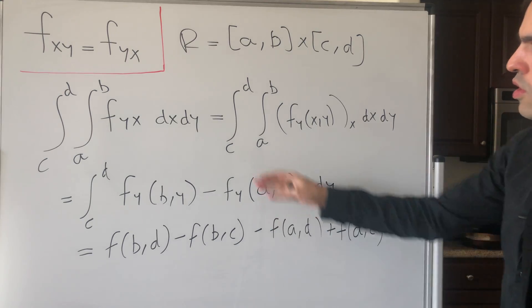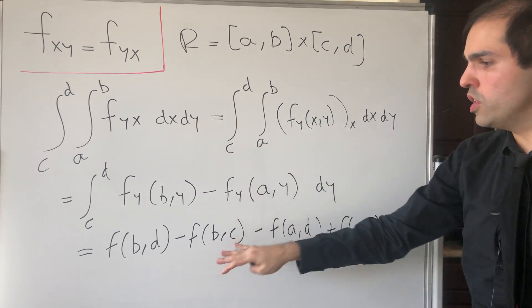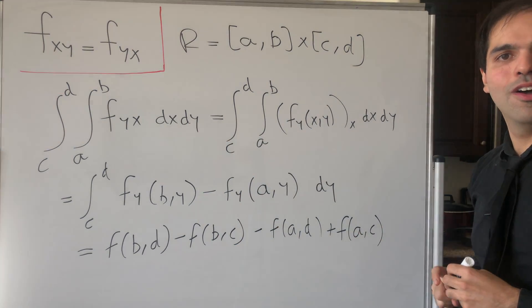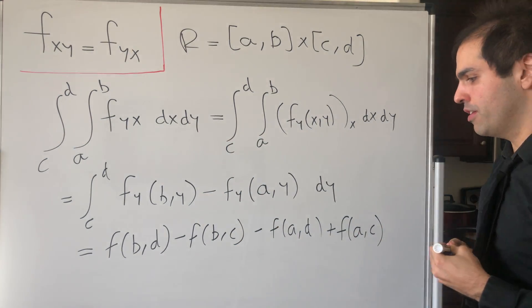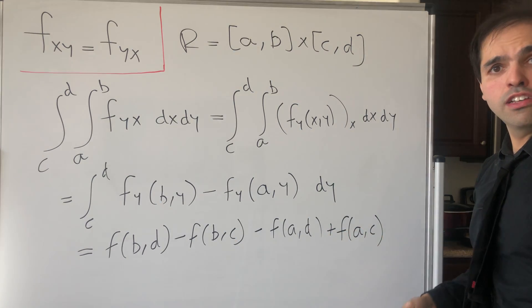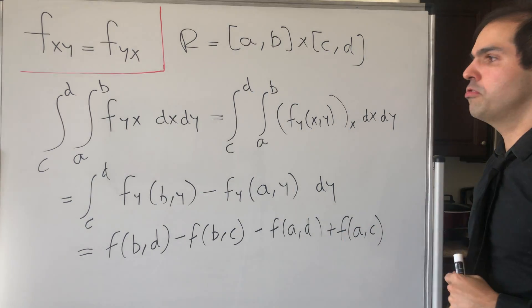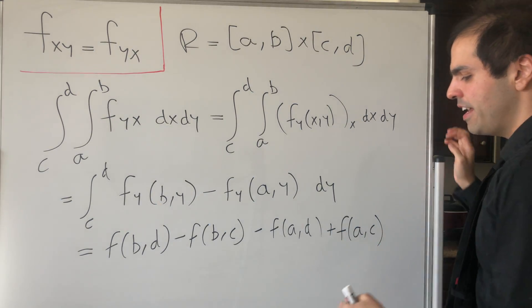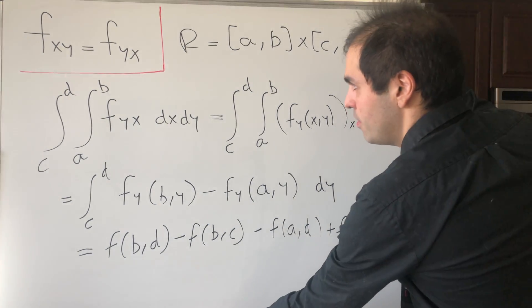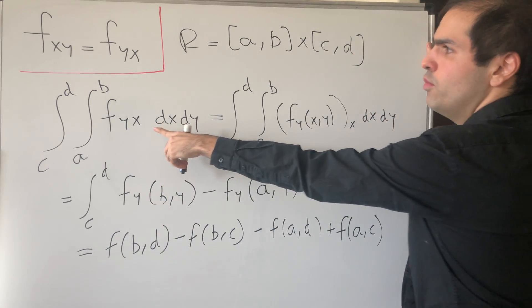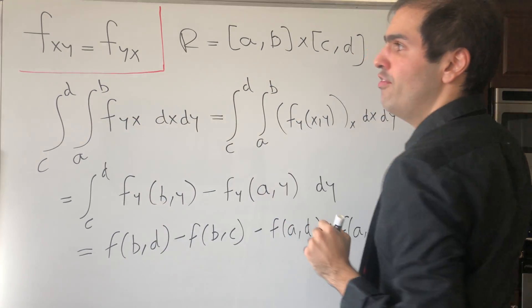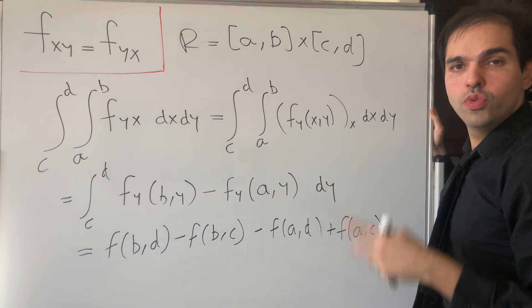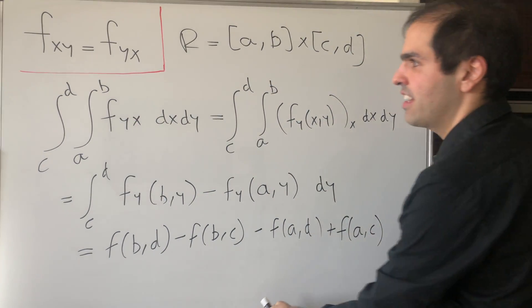So this integral becomes this value: f(b,d) − f(b,c) − f(a,d) + f(a,c). Remember this, because this will be useful in a second. We did that for f_yx; now let's do it for f_xy.